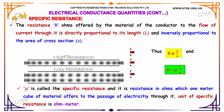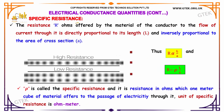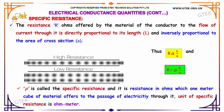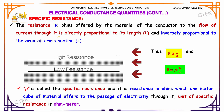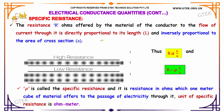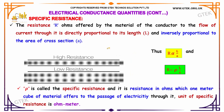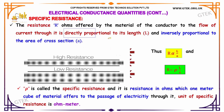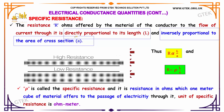Let's discuss specific resistance. The resistance R, in ohms, offered by the material of a conductor to the flow of current through it is directly proportional to its length L and inversely proportional to its area of cross-section, indicated as A.